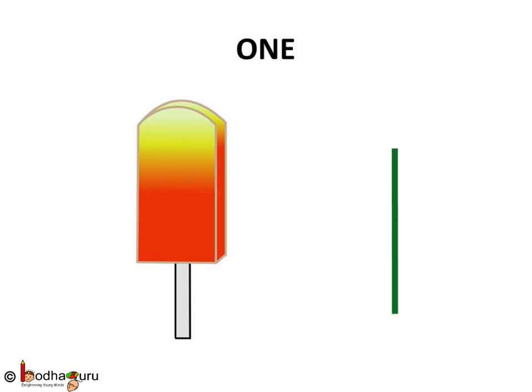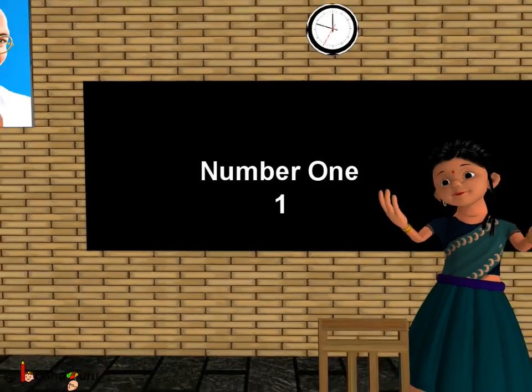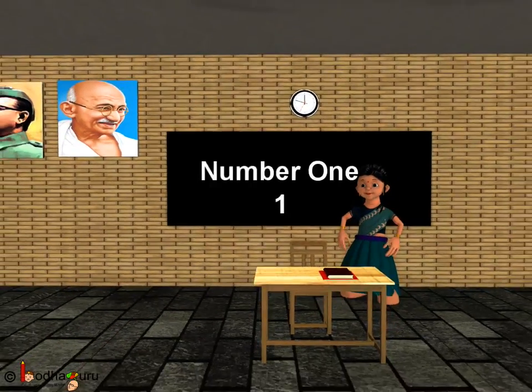See, now we know how to write number one. One, it is a standing line. Bye-bye, kids.